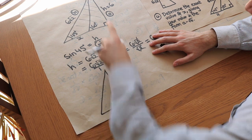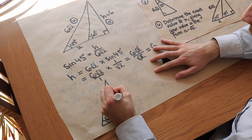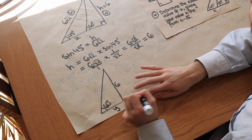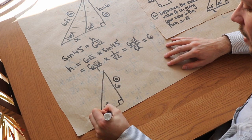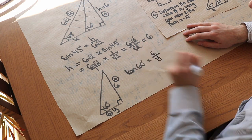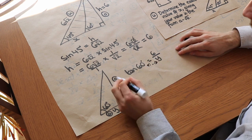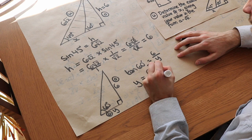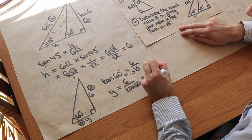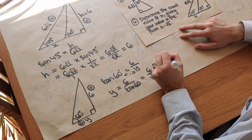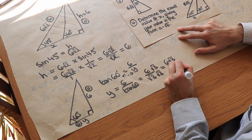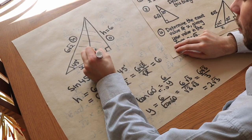Now using the second triangle with the 60-degree angle and the known side h = 6: the opposite is 6 and the adjacent is y, so tan(60°) = 6/y, giving y = 6/tan(60°) = 6/√3. Rationalising by multiplying top and bottom by √3: y = 6√3/3 = 2√3. So this length is 2√3.